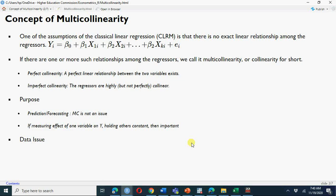When we have a classical linear regression model, we assume that X1, X2, through Xk are neither perfectly correlated nor very highly correlated. But they should be correlated. If they are not correlated, it does not make sense to include all these variables in one model.